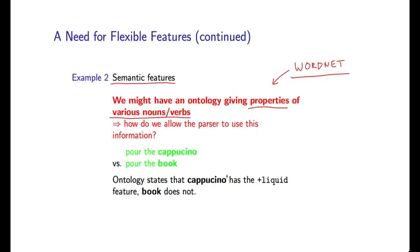And this ontology might state, for example, that the word cappuccino has the plus liquid feature, whereas the word book does not have that feature. Okay, so cappuccino is a liquid. And that's important if we're thinking about a verb like pour, where in general nouns which have a plus liquid feature are likely to appear as objects, whereas nouns which are not liquids are much less likely to be objects.